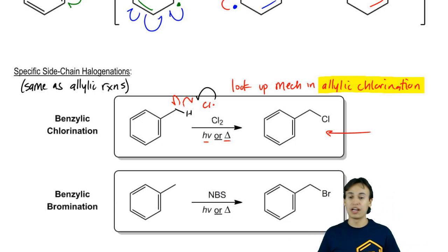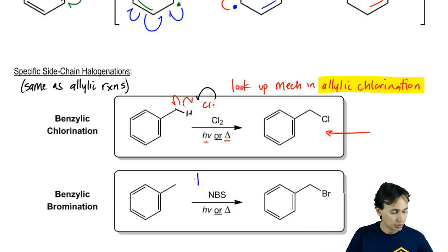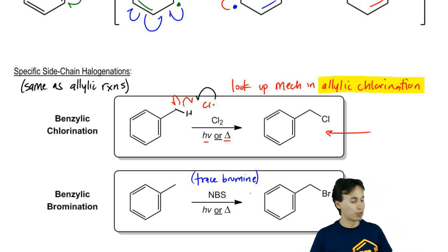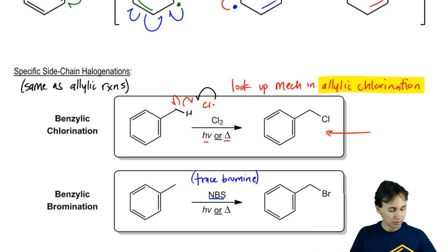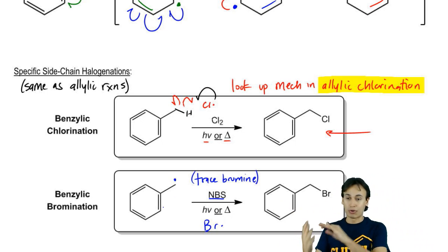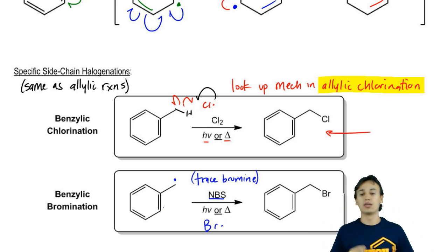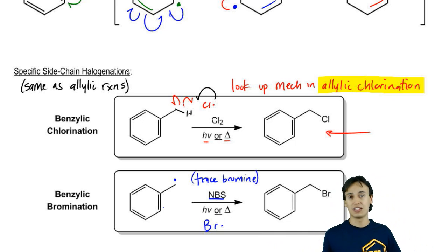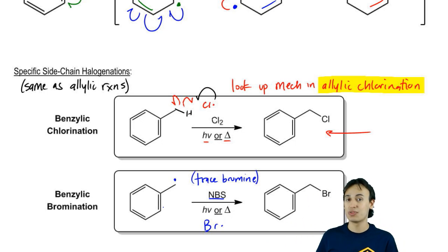Benzylic bromination — remember, you need trace amounts of bromine because you don't want any cross reactions. That's what NBS is. NBS is a source of trace bromine and that's why we use it. NBS with heat or light is going to make Br radicals, and those Br radicals are going to wind up planting a radical on the benzylic position. Eventually they terminate or propagate through Br2, and you wind up getting a benzylic bromine. These are called side chain reactions because this has nothing to do with EAS — it's just a reaction that can occur at the benzylic position because it's so stable.